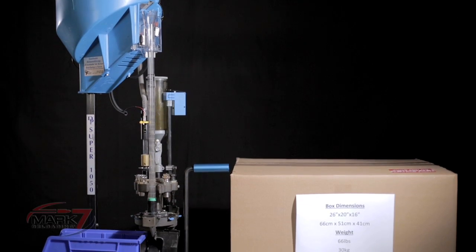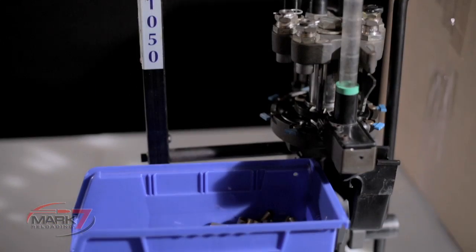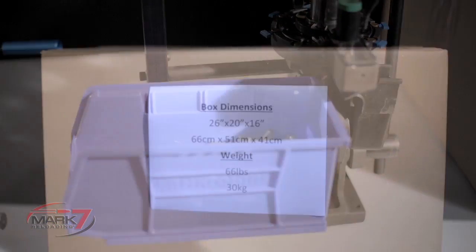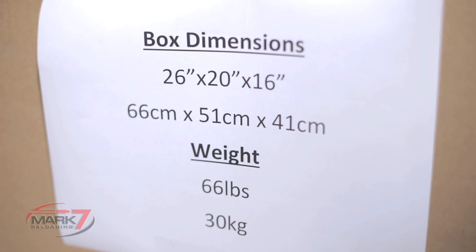In this video we're going to be setting up a Mark 7 Autodrive on a Dillon 1050 reloading press. The Mark 7 Autodrive is shipped in a box that weighs 66 pounds and is 26 by 20 by 16.